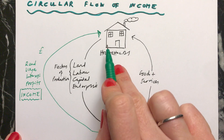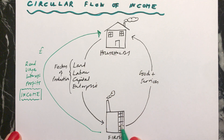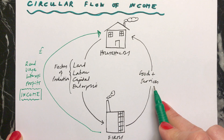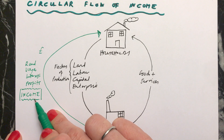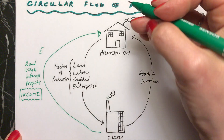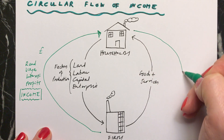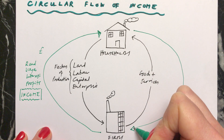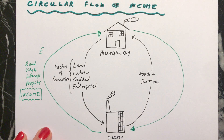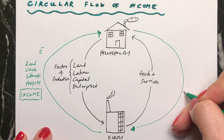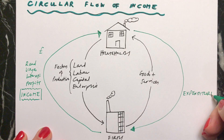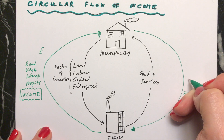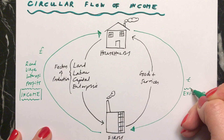Then, as we said, the firms use the factors of production to make all of these goods and services. We then assume that the households buy all of the goods and services, and the money that the households have is the income they've received for the factors of production. And they pay that money to the firms in return for these goods and services. This amount of money we call expenditure.